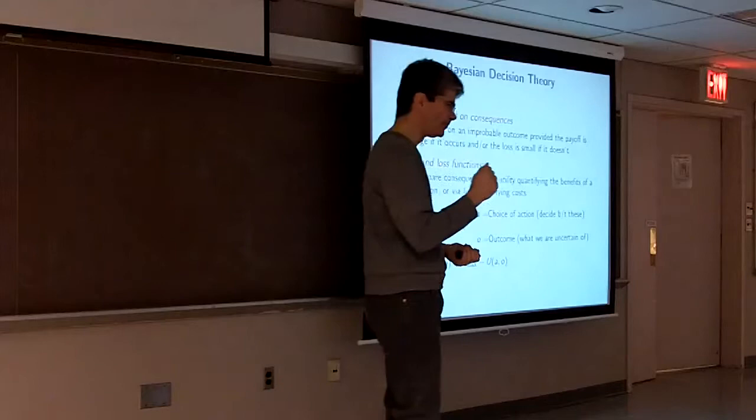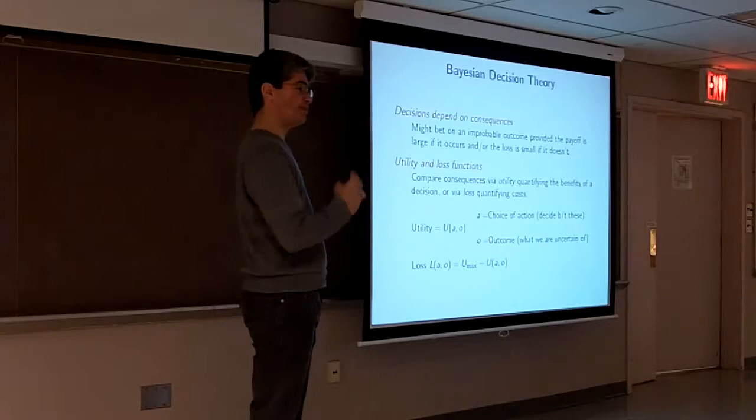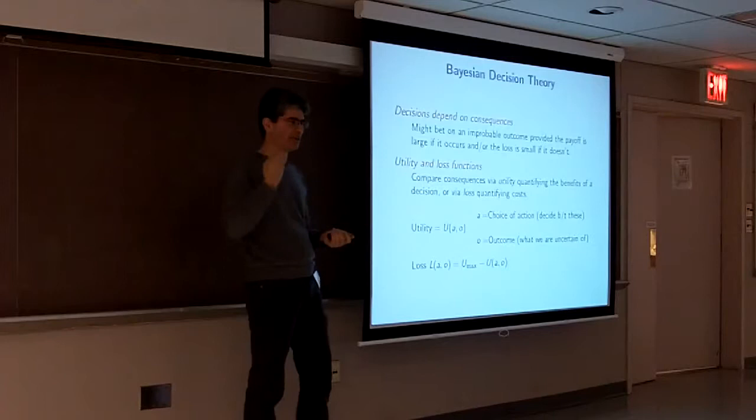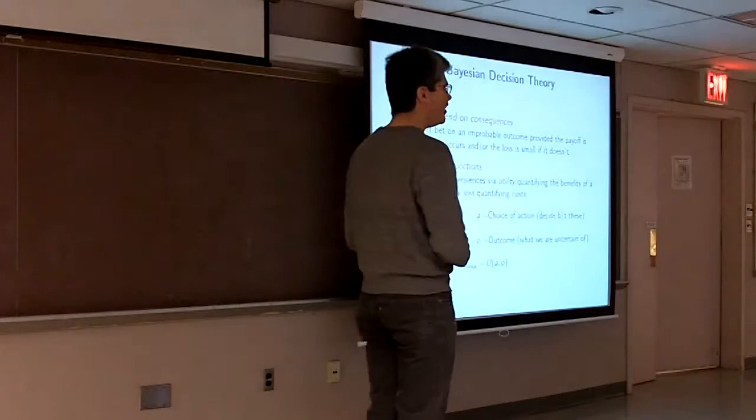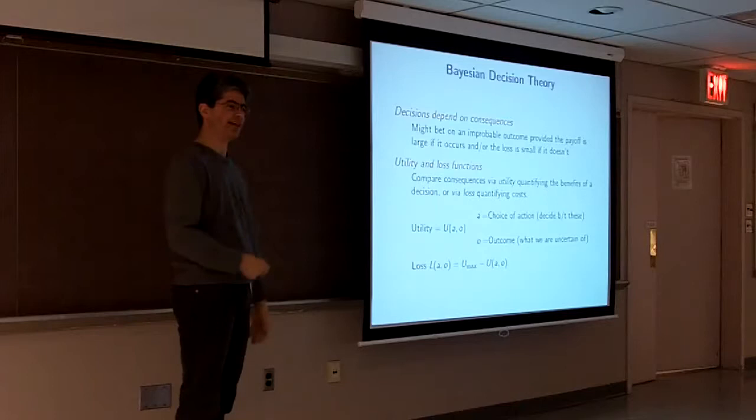Bayesian decision theory is kind of a general approach for making decisions of any type in the light of uncertainty. The key idea behind it, the key additional piece to what most astronomers know about Bayesian statistics, which is this idea of likelihoods and priors. The key new piece in decision theory is that decisions depend not just on what you know about the system, but on the consequences of your actions.